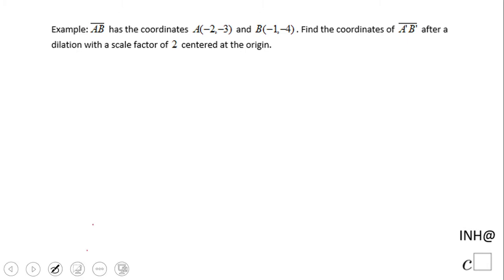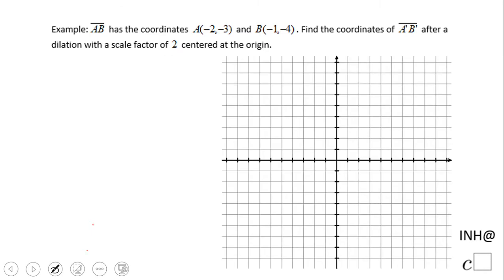The first thing I'm going to do is use a graphical method. Let's start with point A at (-2, -3). I'll plot it here on the graph - this is point A.